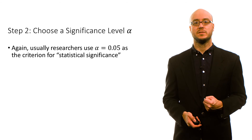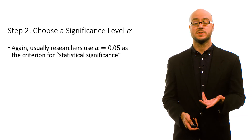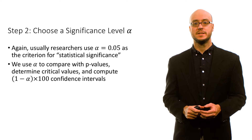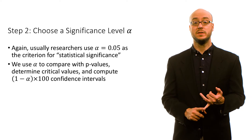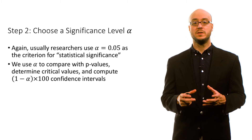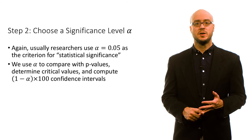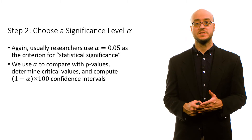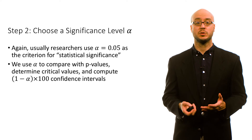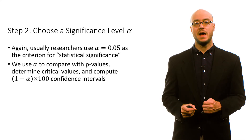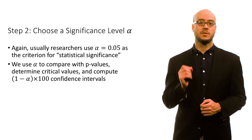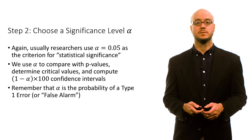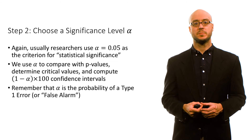For step two, we choose our significance level alpha — the criterion we use for statistical significance. Typically in the social sciences, we use an alpha of 0.05. Selecting alpha is important because it affects how we make a decision based on p-values, serving as the benchmark for whether a p-value is low. It also affects our critical values and our confidence intervals, since a confidence interval is (1 − α) × 100%. Remember that alpha is simply the probability of a type 1 error, or a false alarm. Some fields are more comfortable with a higher probability of a false alarm, while others select an alpha of 0.01 rather than 0.05.